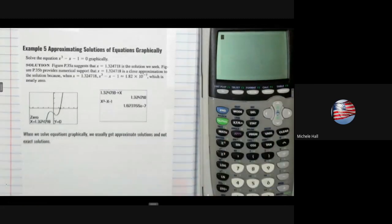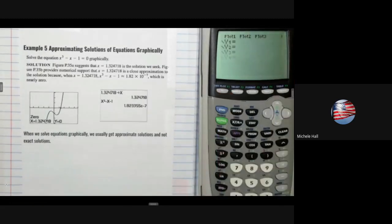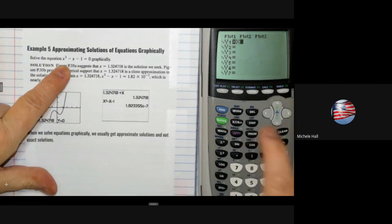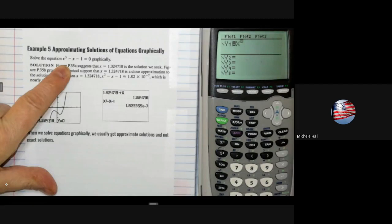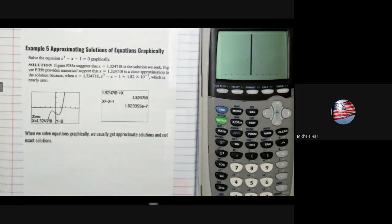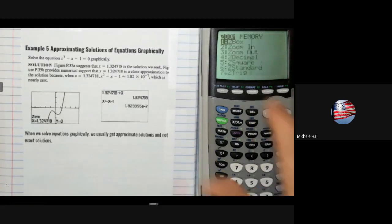Solve the equation graphically. We are going to go to y equals x to the third, using the caret for exponents. So we are going to enter x cubed minus x minus 1. I'm going to go to graph, and I'm going to go to zoom 6 for a standard 10 by 10 zoom.